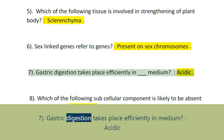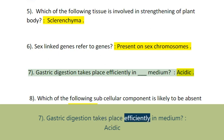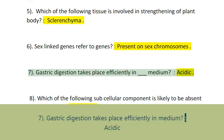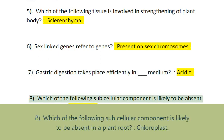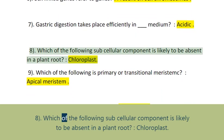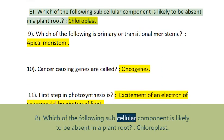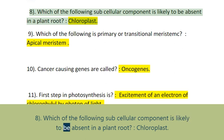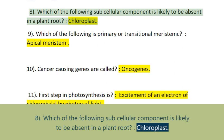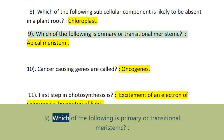Question 7: Gastric digestion takes place efficiently in what medium? Acidic. Question 8: Which of the following subcellular components is likely to be absent in a plant root? Chloroplast.